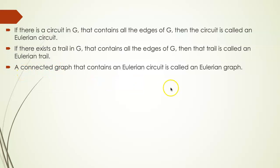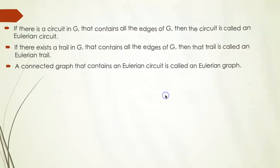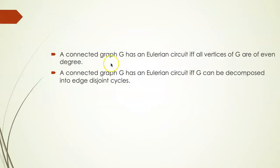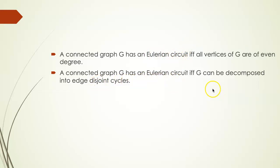A connected graph that contains an Eulerian circuit is called an Eulerian graph. A connected graph has an Eulerian circuit if and only if all the vertices of G are even — meaning if it is Eulerian then all vertices are even, and if all vertices are even the graph is Eulerian. A connected graph also has an Eulerian circuit if and only if G can be decomposed into edge-disjoint cycles. These two properties help determine if a graph is Eulerian.